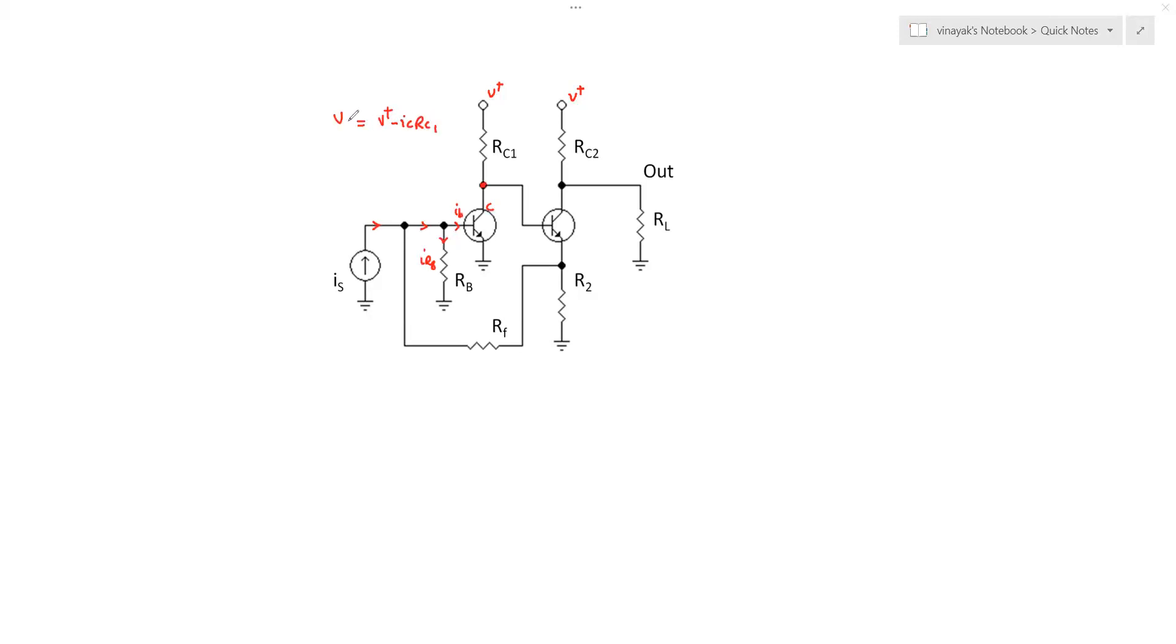And from the collector pin the voltage at the collector pin will be V plus minus IC×RC1 would be the voltage at the collector pin. And the voltage at the collector pin VC should be greater than or equal to VBE of this transistor Q1. Then only the transistor Q1 will be in active mode. That is it will act as a constant current source that will give this collector current flow.